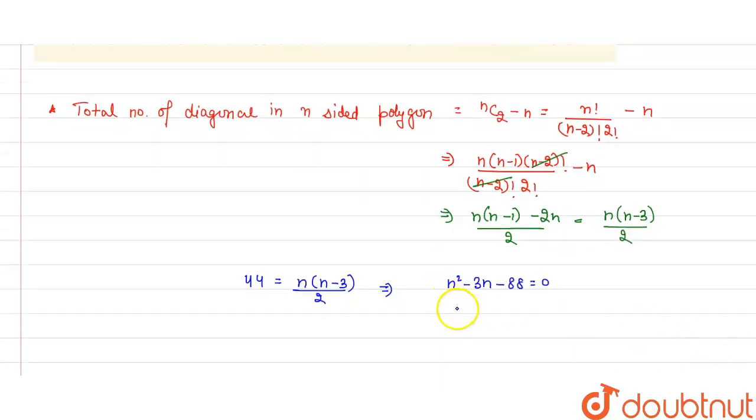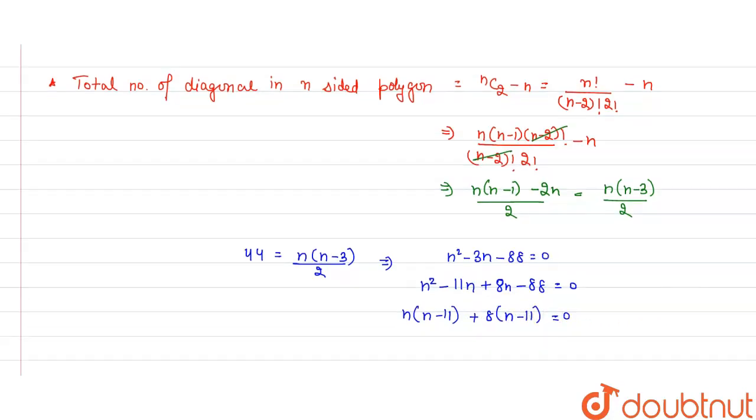Now this is a quadratic equation. We will solve this: n squared minus 11n plus 8n minus 88 equals 0. We will take n minus 11 common and 8 common, plus 8 times (n minus 11) equals 0. This gives us (n plus 8)(n minus 11) equals 0.